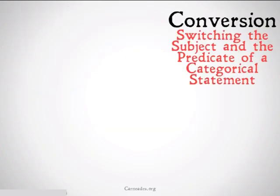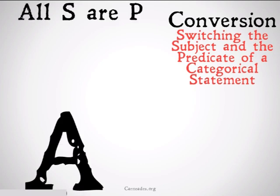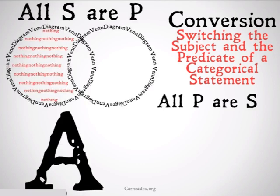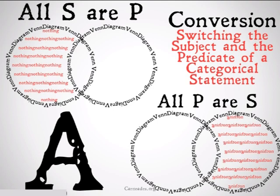Remember, conversion is just switching the subject and the predicate of a categorical statement. So with an A statement, we would be going from all S are P to the statement all P are S. Just looking at the Venn diagrams, it should be pretty clear why this is going to be a fallacy. They do not resemble each other.